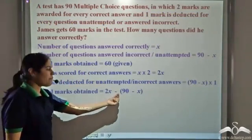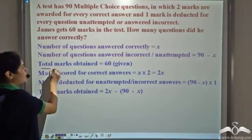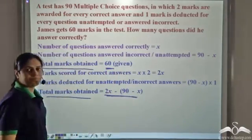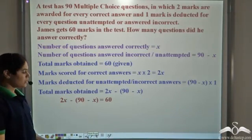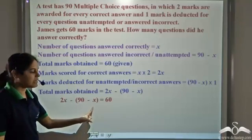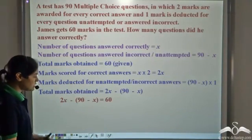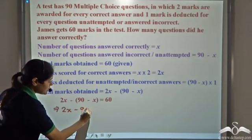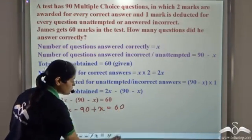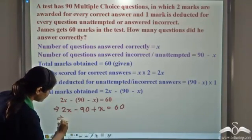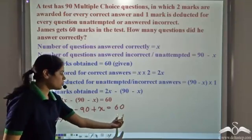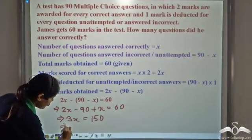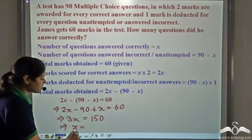So total marks scored will be 2x minus (90 minus x). It is given that total marks obtained is 60, so these two should be equal. Equating, we get 2x minus (90 minus x) is equal to 60. This gives us 2x minus 90 plus x equals 60, so 3x minus 90 equals 60. Transposing, 3x equals 150, so x is equal to 150 divided by 3, that is 50.